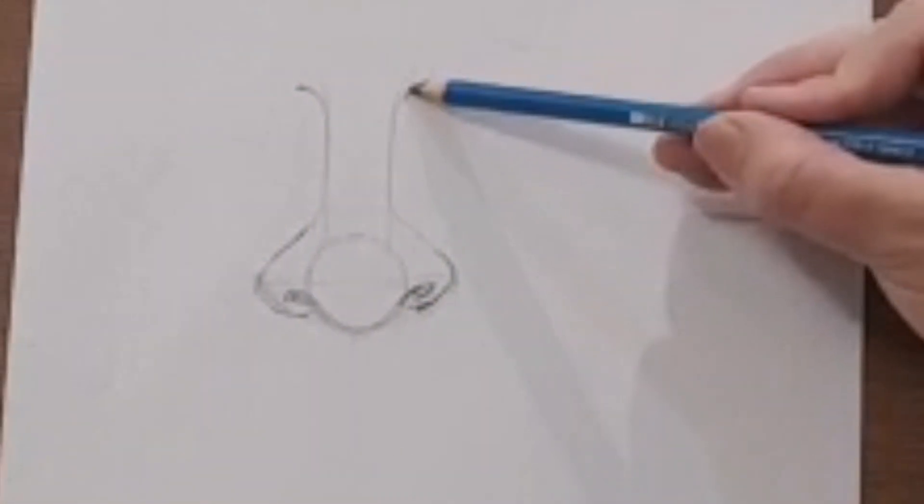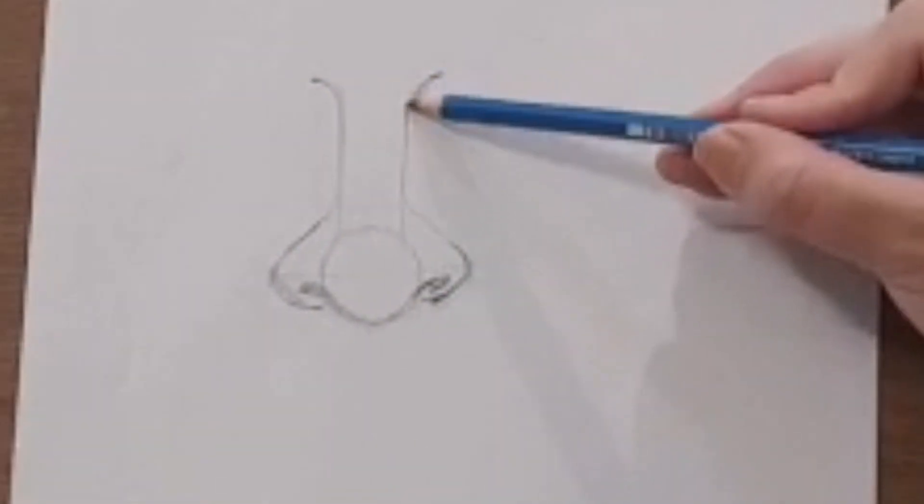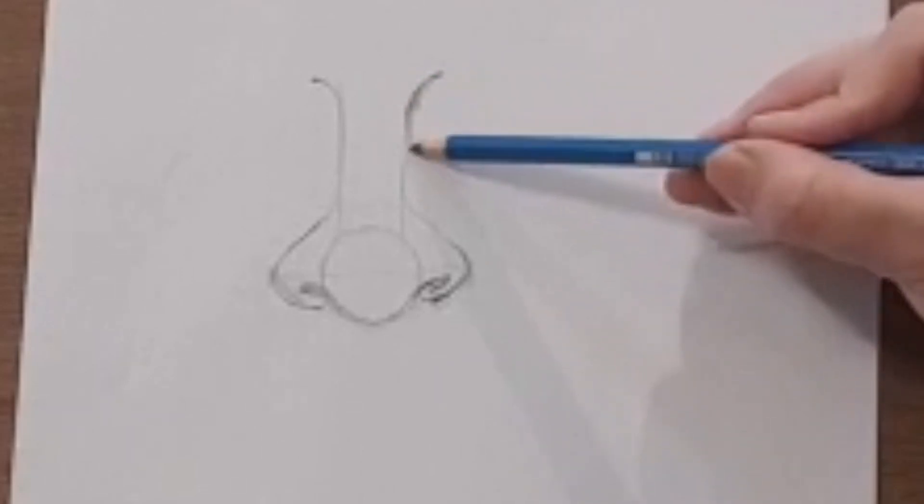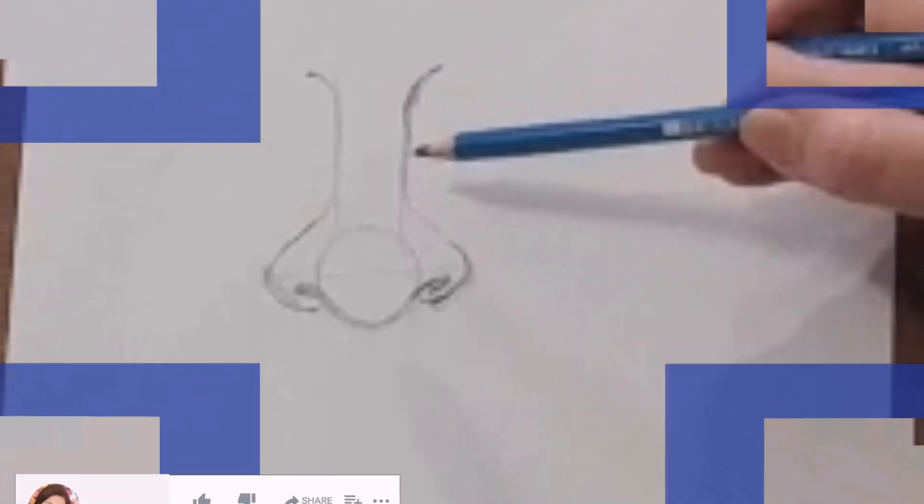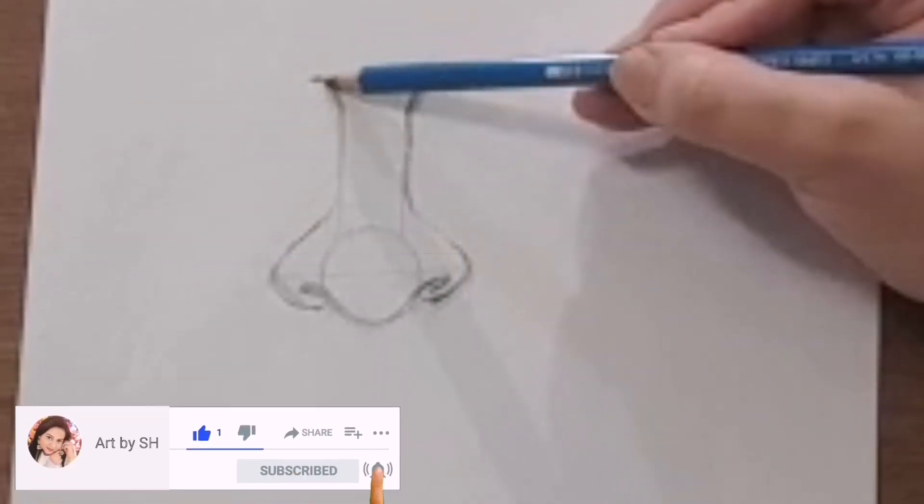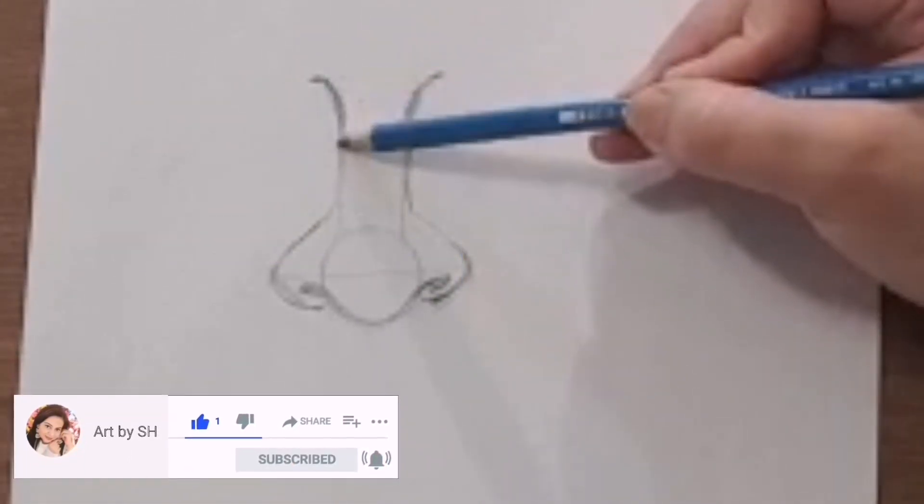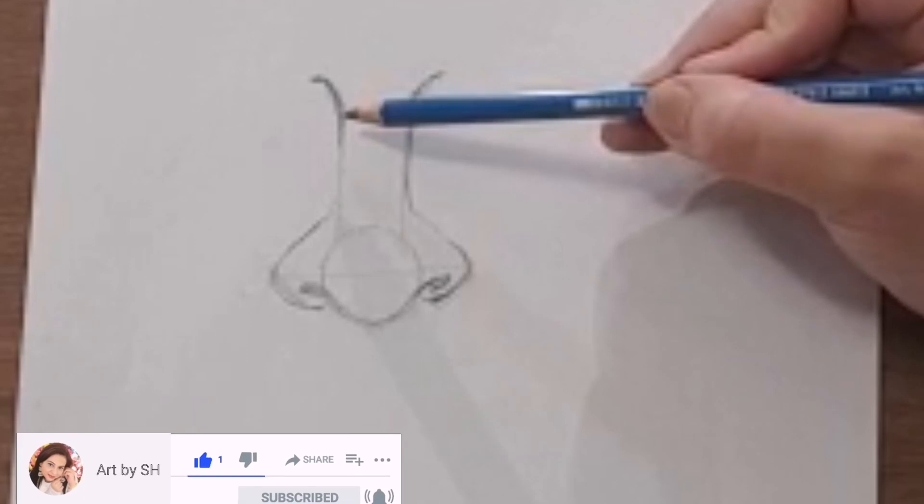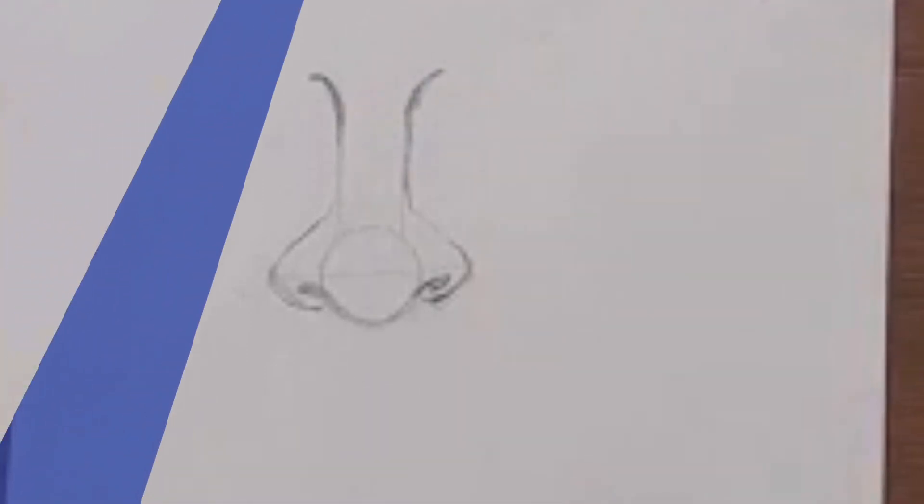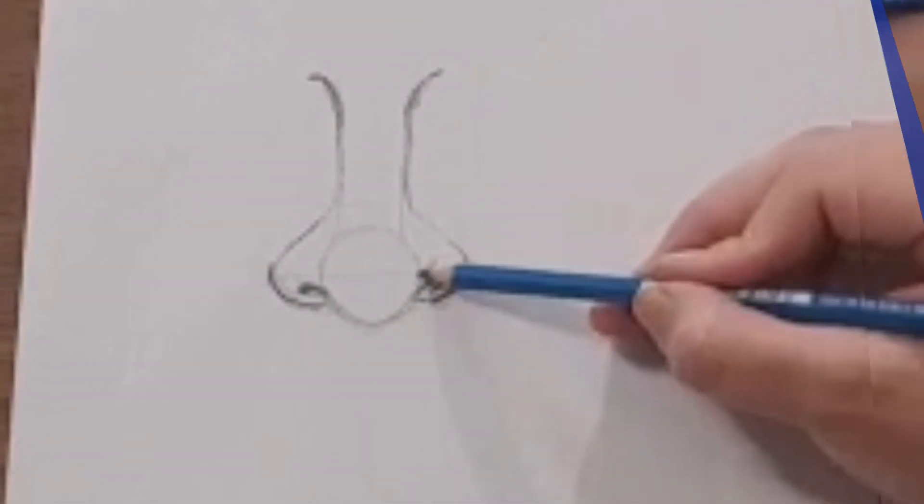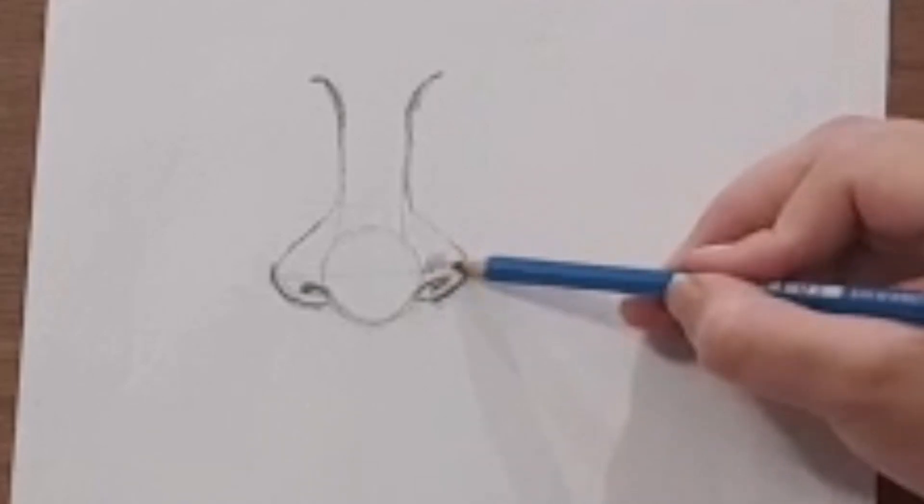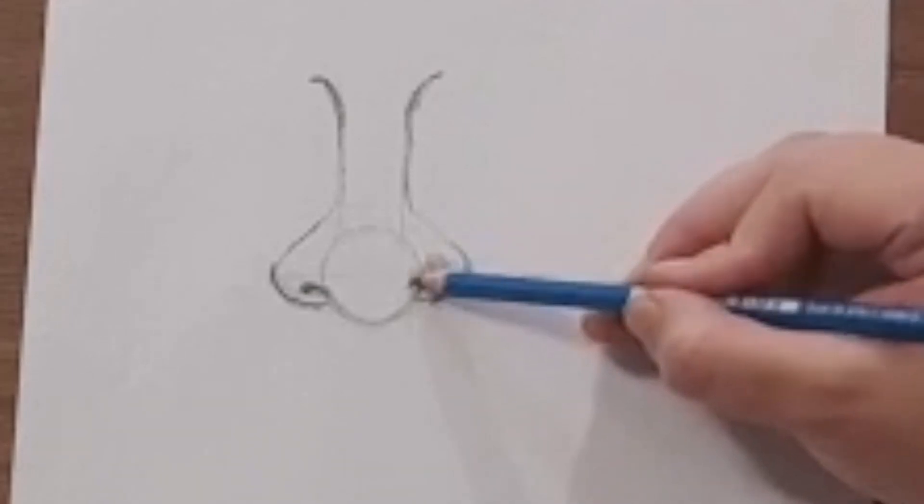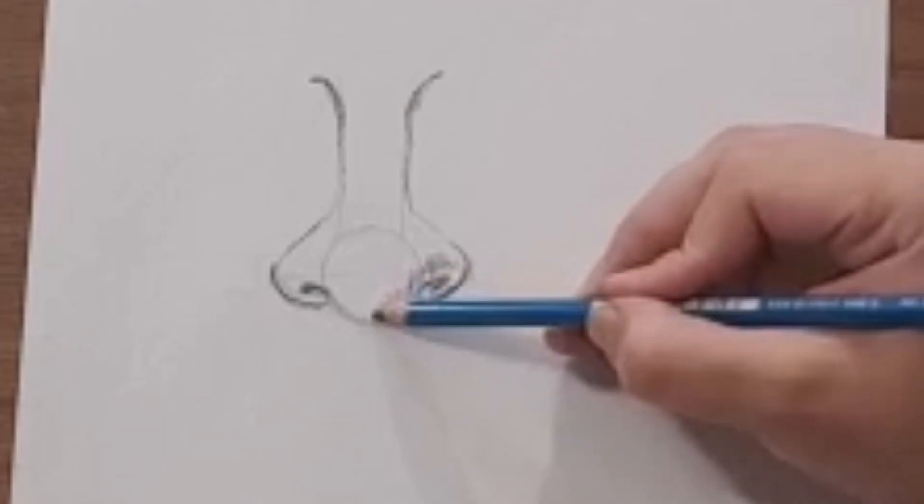Shade around the outer part of the bridge and other dark parts. I use the same HB pencil to shade the sides. Shade around the inner part of the circle. If the guidelines you created earlier did not blend in with your shading, do not worry, we will darken the drawing later.